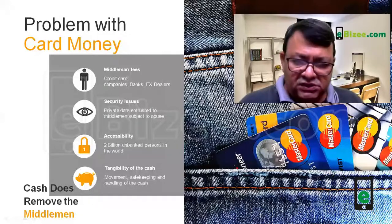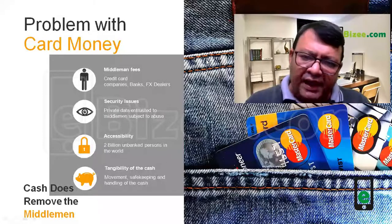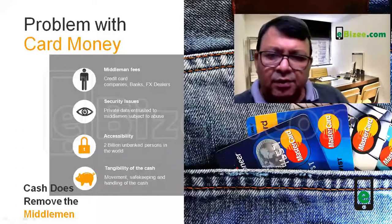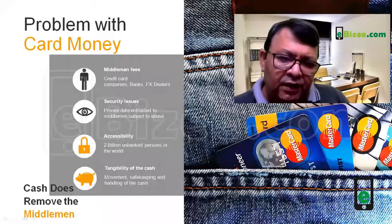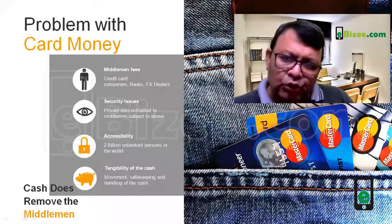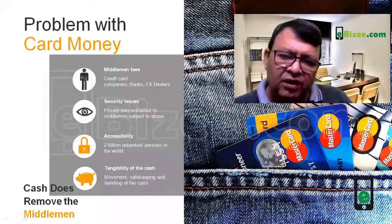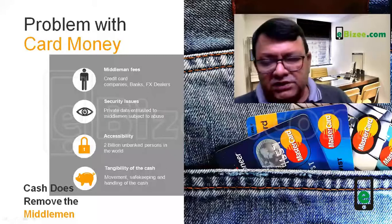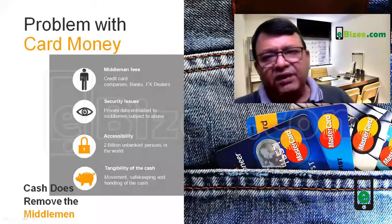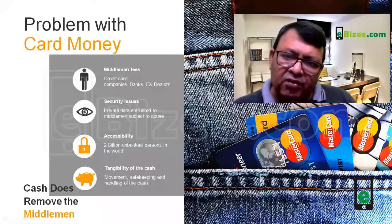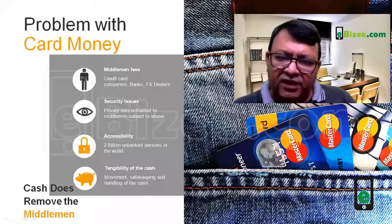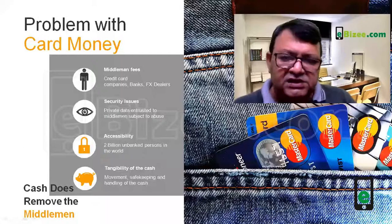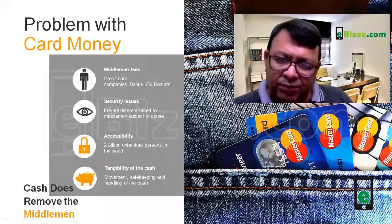The third problem is the accessibility of these instruments, which are mostly based on bank accounts. On this planet, we have almost 2 billion unbanked people — people with no access to bank accounts. They find it very difficult to transact money, especially over long distances or in international transfers. In today's world where everything is becoming digital, unbanked people find it really difficult to survive in the changing environment of e-commerce and digital commerce.